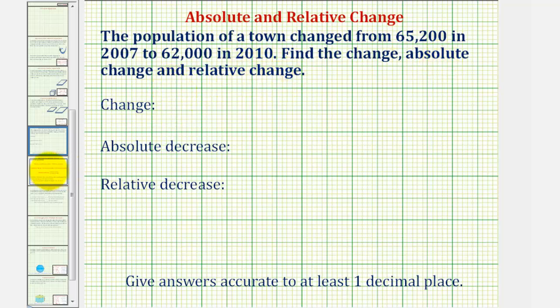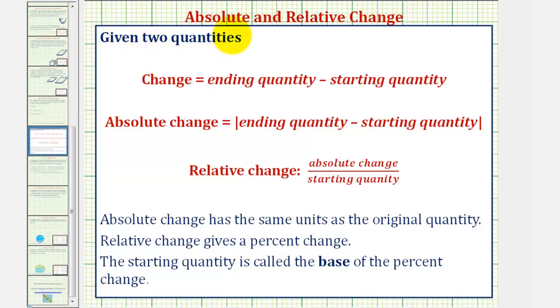Let's begin with a quick review. If we're given two quantities, the change is equal to the ending quantity minus the starting quantity. So notice how the change can be either positive or negative. Then the absolute change is the absolute value of the change, which will always be positive.